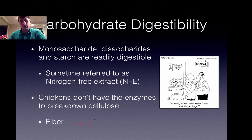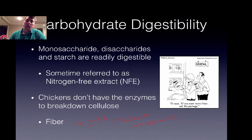Including fiber at a rate of around 2% to 3% in the diet has been shown to increase gastrointestinal health. Some studies have shown it can increase intestinal villi height and decrease pathogenic organisms — so decreased pathogens and increased GI health through increased intestinal villi.